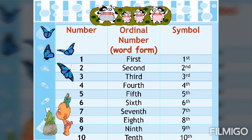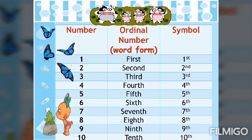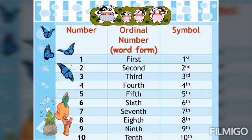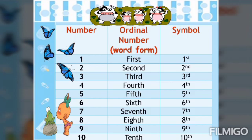Number six is 'sixth' and the symbol is '6th.' Number seven is 'seventh' and the symbol is '7th.' Number eight — the word form is 'eighth' and the symbol is '8th.' Number nine is '9th' in symbol. And the last number, which is ten — in word form we have 'tenth' and the symbol is '10th.'